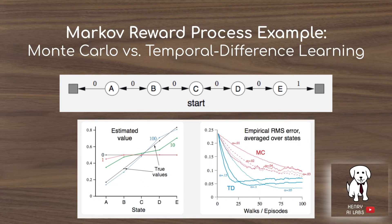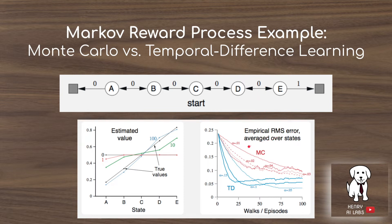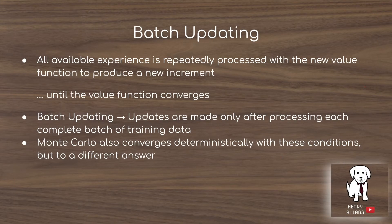In the Markov reward process example, we start from state C and move randomly left or right until reaching a terminal state with no reward or a terminal state with reward of one. Temporal difference learning shows convergence of values as episodes are sampled — from zero to one, ten, and a hundred episodes — getting close to the true values. We then see a comparison in root mean squared error between Monte Carlo and temporal difference learning. Additionally, we can save experience and do batch updating, looping through experience to iterate on value functions until convergence, where Monte Carlo and TD converge differently.